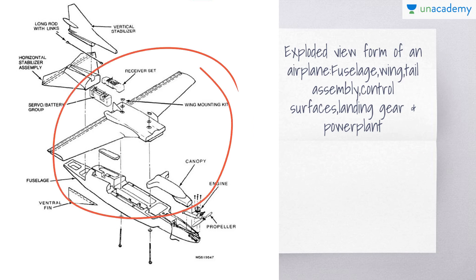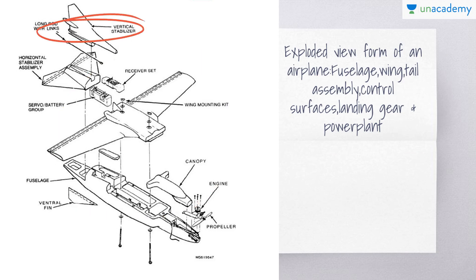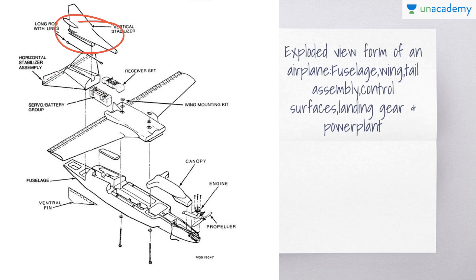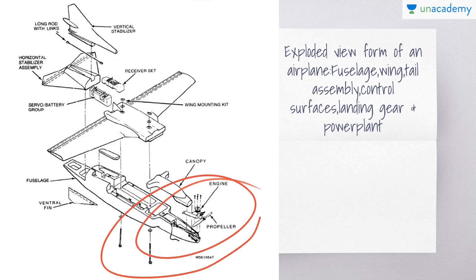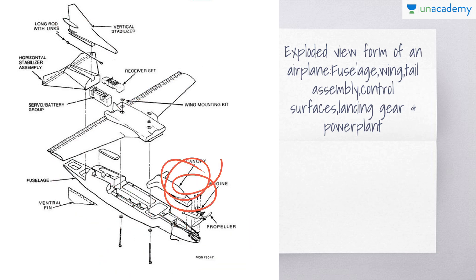This is the tail assembly — here you can see the horizontal stabilizer and the vertical stabilizer. This is the wing part, which may include flaps, ailerons, slats, and spoilers. This is the fuselage, and here might be the cockpit. This is the engine. When we combine all these components we get a complete aircraft.